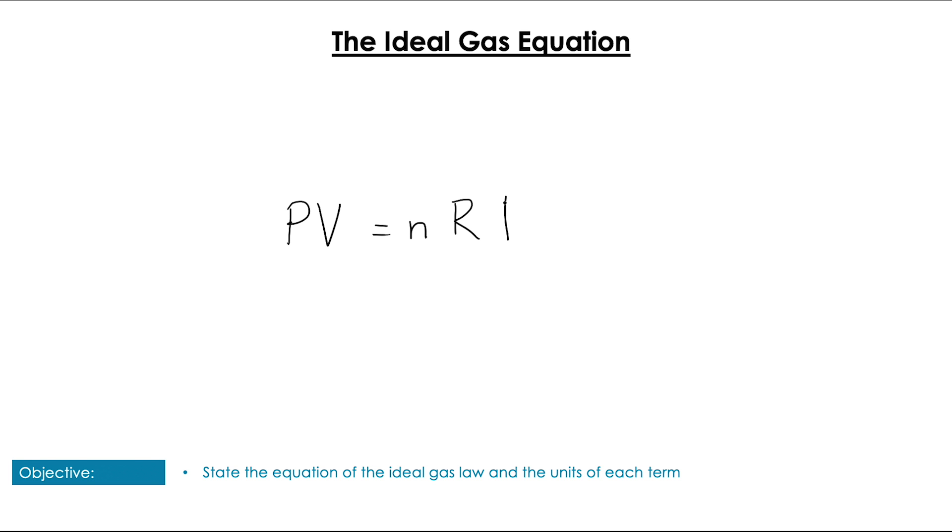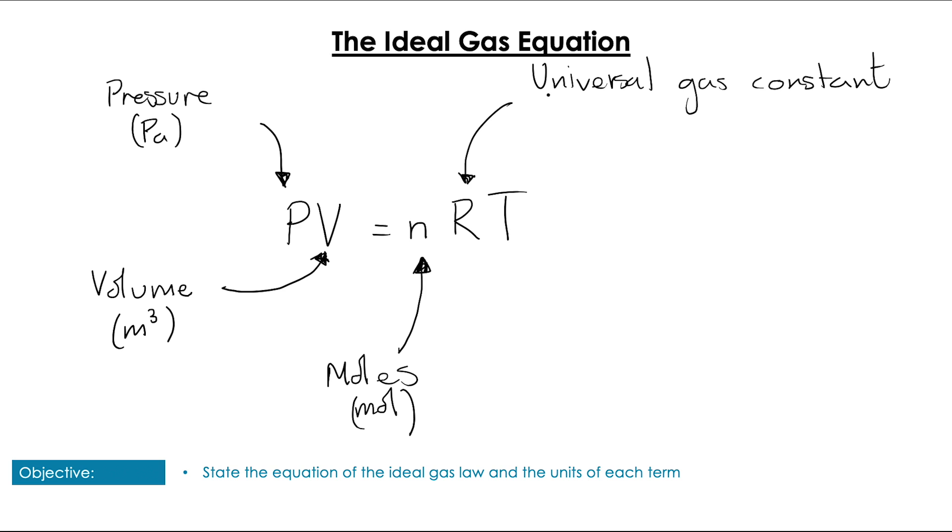It's usually given in the form of PV equals nRT, where P is equal to pressure in pascals, V is equal to volume in meters cubed, N is our trusty old moles, given of course in moles. R is the universal gas constant, which has the units joules per kelvin per mole, and always has the value 8.31, as it's given in the data booklet. And lastly, we have T, which is temperature, and that's recorded in kelvin.